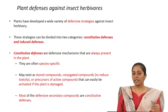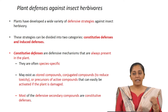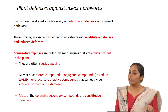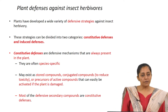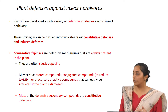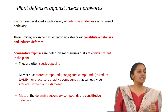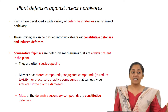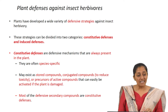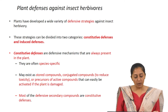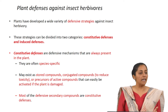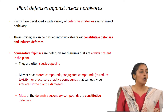Once the second line of defense is needed, signal cascade pathways are involved. Constitutive defense is species-specific — secondary metabolites inherently present in one plant may not be present in another. They may exist as stored compounds, conjugated compounds to reduce toxicity, or as precursors of active compounds that can easily be activated if the plant is damaged. Most defensive secondary metabolites are constitutive defense.